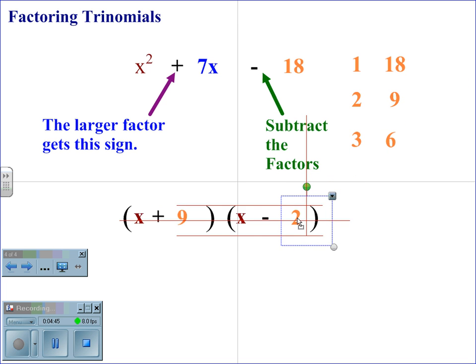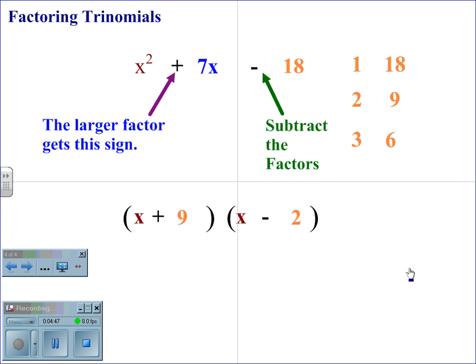So for the trinomial x squared plus 7x minus 18, the factors are x plus 9, x minus 2, where x plus 9 carries the first sign of the trinomial.